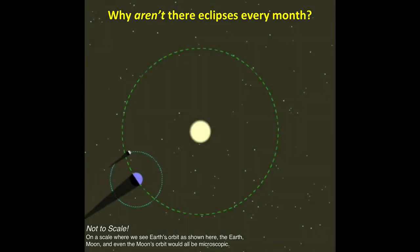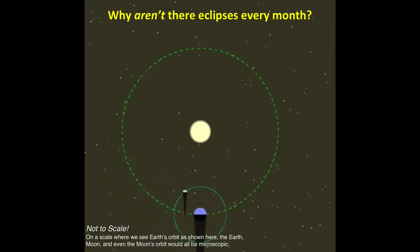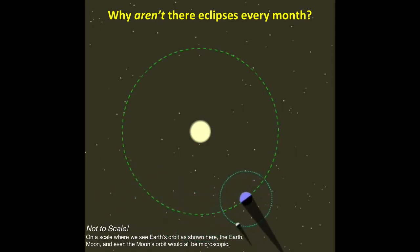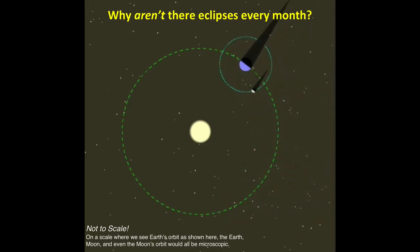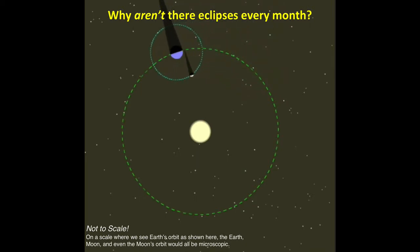Let's now back away until we are looking down from high above our solar system, so that we can see the moon orbiting Earth while Earth orbits the sun. From this viewpoint, it might look as though we should have eclipses with every new and full moon, but we don't, and the reason is that the moon's orbit around Earth is slightly tilted to the Earth's orbit around the sun.